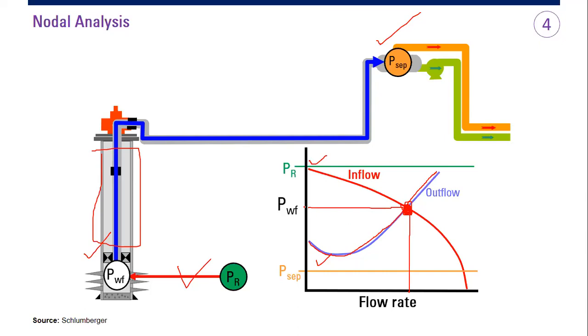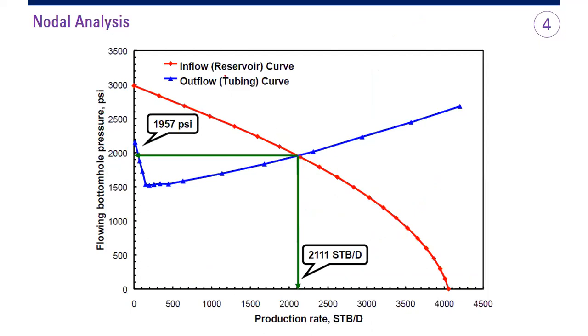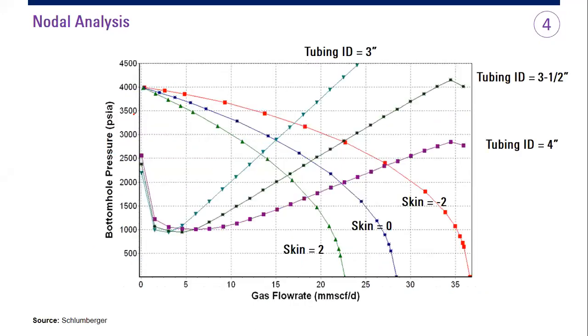Of course, we can increase our flow rate, we can decrease our flow rate. Now we can see this is basically the same thing. So you plot your inflow and you plot your outflow, the intersection is the operating point. So you're operating under this condition, the flow rate of 2,111 stock tank barrel per day, and bottom hole flowing pressure of 1,957 PSI. You can increase your production rate using this one.